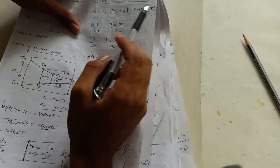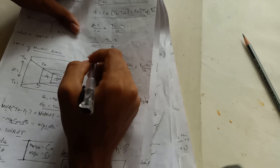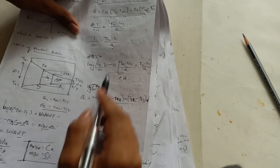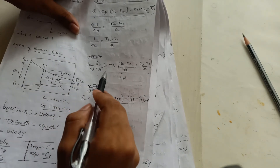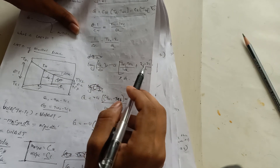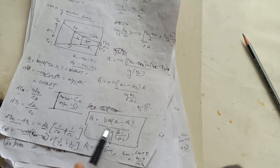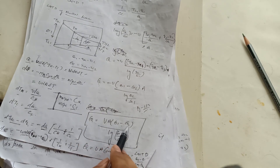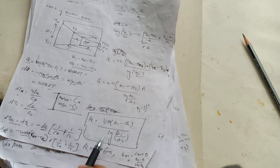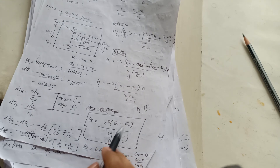Using 1/CH equals (TH1 minus TH2)/Q and 1/CC equals (TC2 minus TC1)/Q, and substituting back, we arrive at: Q equals U·A·(theta1 minus theta2) divided by log(theta1/theta2). Therefore, theta_M, the Logarithmic Mean Temperature Difference (LMTD) for a parallel flow heat exchanger, equals (theta1 minus theta2) divided by log(theta1/theta2). This completes the LMTD derivation.